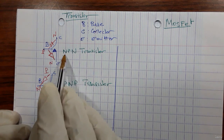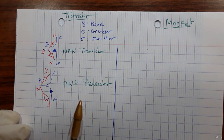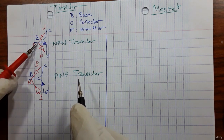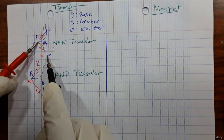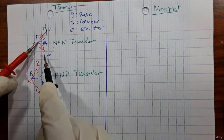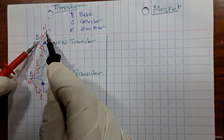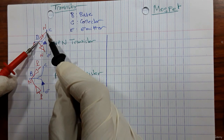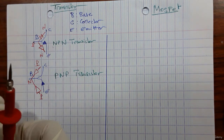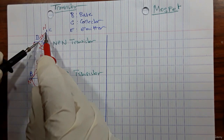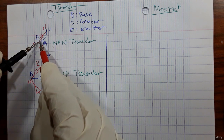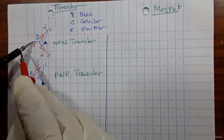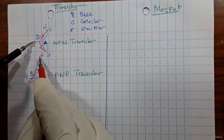For an NPN transistor, using the multimeter: if we put the red probe on the base and the black probe on the emitter, we should get a reading of about 300 to 700 on the multimeter. When we switch the black probe to the collector we should also get a reading. But if we put the black probe on the base and the red probe on the emitter or collector, we should get no reading.